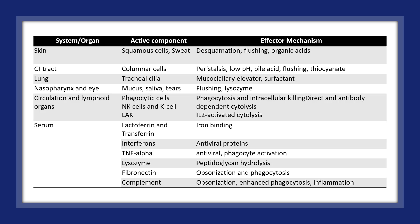Looking at the organs involved in a non-specific immune response, these include the skin, the GI tract, the lungs, the nasopharynx, eye, circulation, lymphoid organs, and serum. The active components include squamous cells, columnar cells, tachylochylia, lactoferrin, transferrin, interferons, and TNF-alpha. For example, TNF-alpha is antiviral and involved in activation of phagocytes, lysozymes, and peptidoglycan lysis. Complement is involved in opsonisation, enhanced phagocytosis, and inflammation.